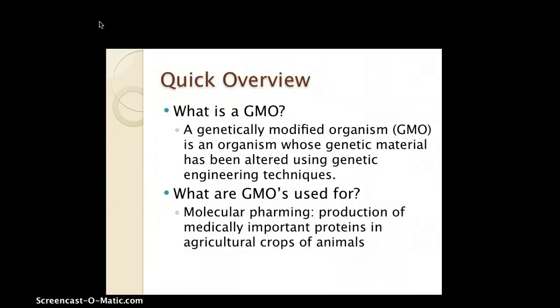Quick overview: what is a GMO? A GMO is a genetically modified organism whose genetic material has been altered using genetic engineering techniques. In simple words, we basically changed up some genetic material in order for it to work in a better way for us.